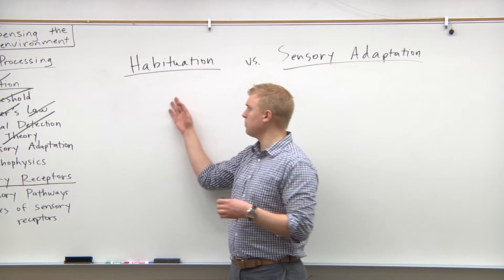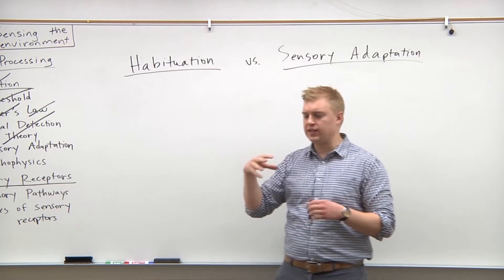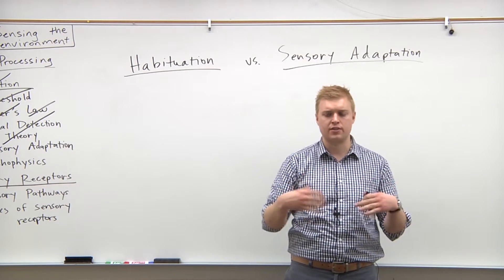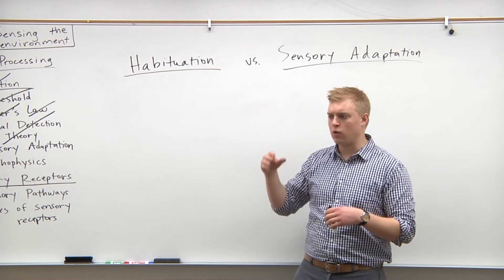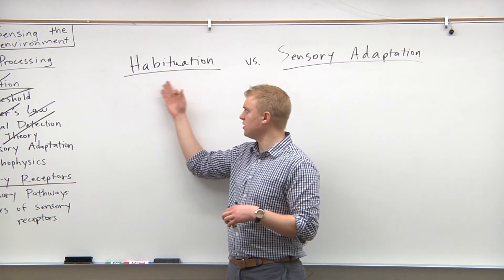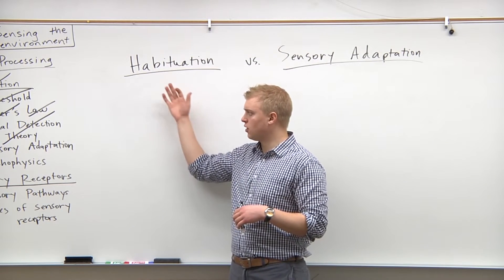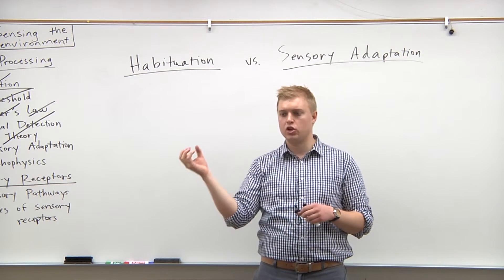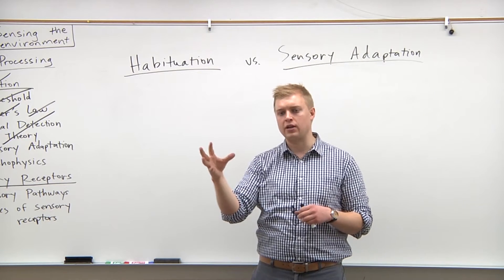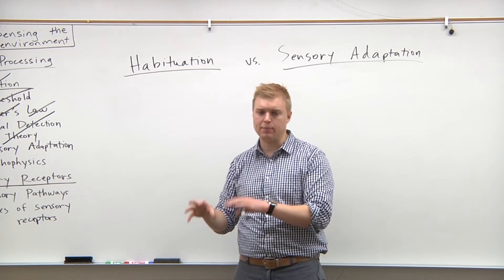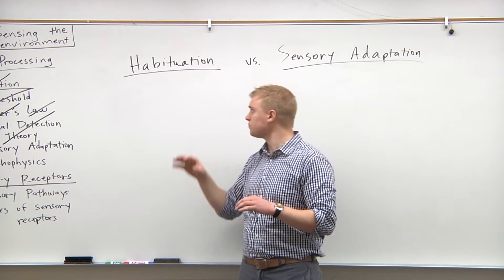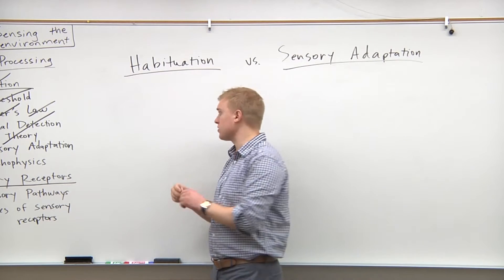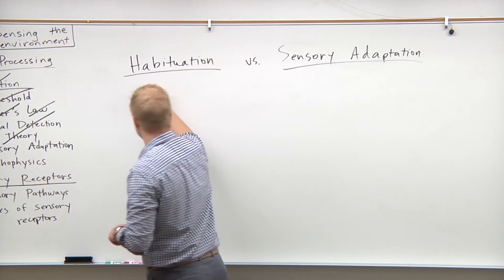A couple of examples of habituation would be listening to an air conditioner or a fan that's constant. The receptors are still sending the stimulus to the brain, but it's not being sent to the cortex to be processed. This is the tendency of the brain to do this with the ears — so this is specifically with hearing.